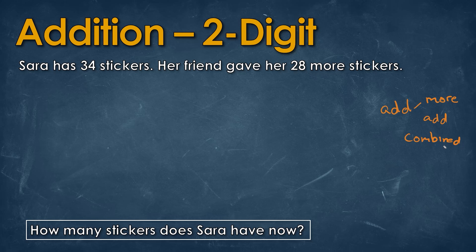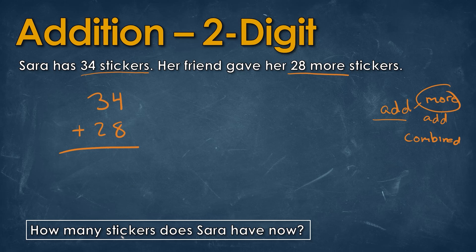Sarah has 34 stickers, and it's okay to highlight things you think are important. Her friend gave her 28 more stickers. There's that word 'more', so we know we're going to add these together. How many stickers does Sarah have now? She originally had 34 stickers and is given 28 more, so she'll increase her total. We put a line down the middle: 4 plus 8 is 12, so we put 2 here and carry the 1. One plus 3 plus 2 is 6. The answer is 62 stickers.